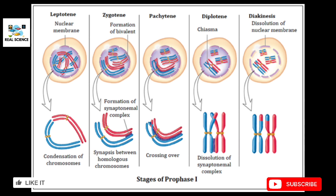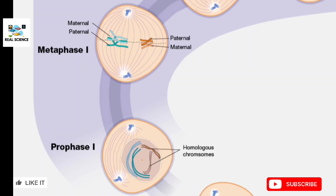The second phase is metaphase one of meiosis one. Here, everything is similar to the metaphase of mitosis — the polar bodies are already formed and are extending spindle fibers towards the chromosomes, which are aligned at the center of the cell at the equatorial plane, and these attach to the chromosome centromeres.